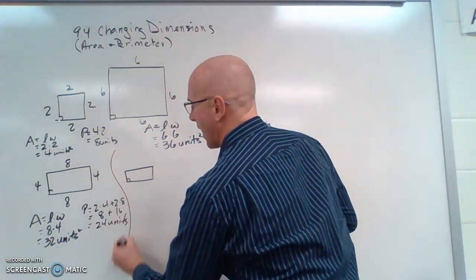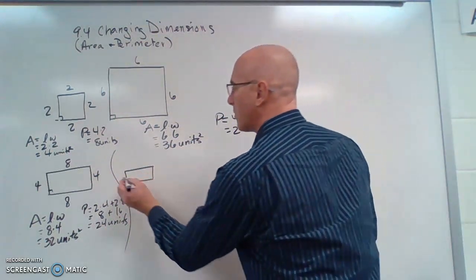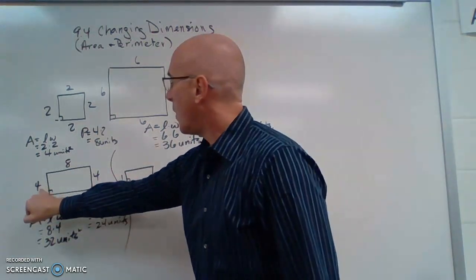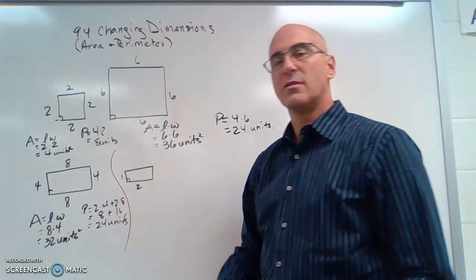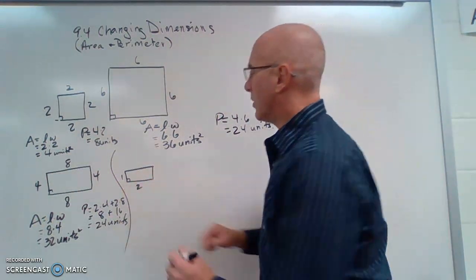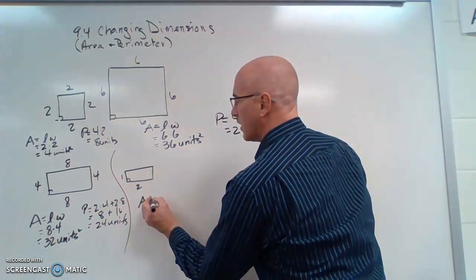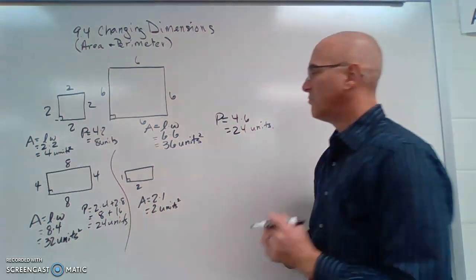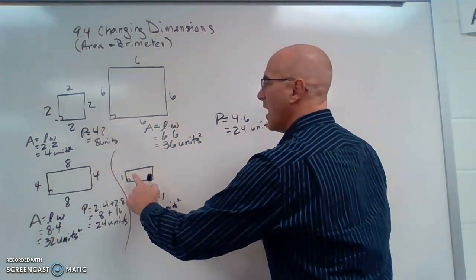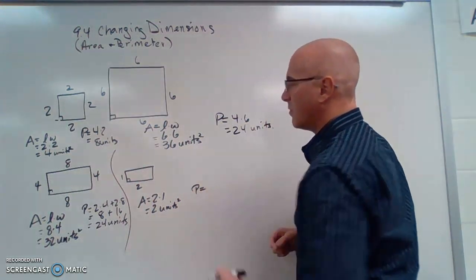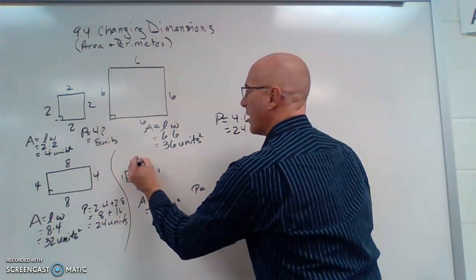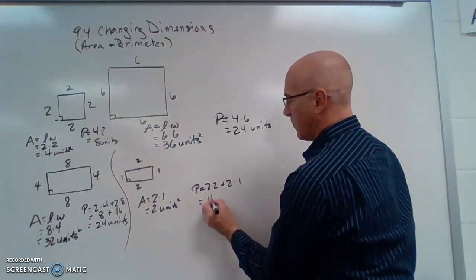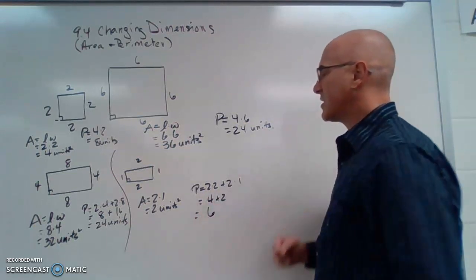Now I have a smaller rectangle. I'm going to tell you that this is a 1 by 2 rectangle. I am dividing each of these lengths by 4. Let's look at the area. It is 2 times 1, which is 2 units squared. Then I'm going to do the perimeter, which is 2 times 2 plus 2 times 1. That's 4 plus 2, which is 6.